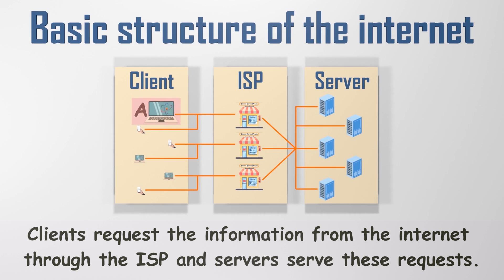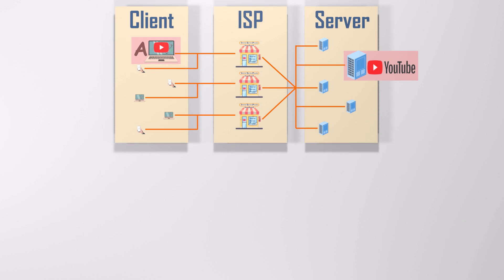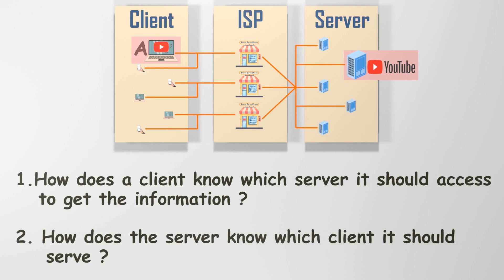This is the basic structure of the Internet. Clients request information from the Internet through the ISP, and servers serve these requests. For instance, consider a scenario where Client A wishes to access YouTube from a computer. In this case, it sends a request to the YouTube server through its Internet Service Provider. Subsequently, the server delivers the requested information back to the client. Now, how does a client know which server it should access, and how does the server identify which client to serve?